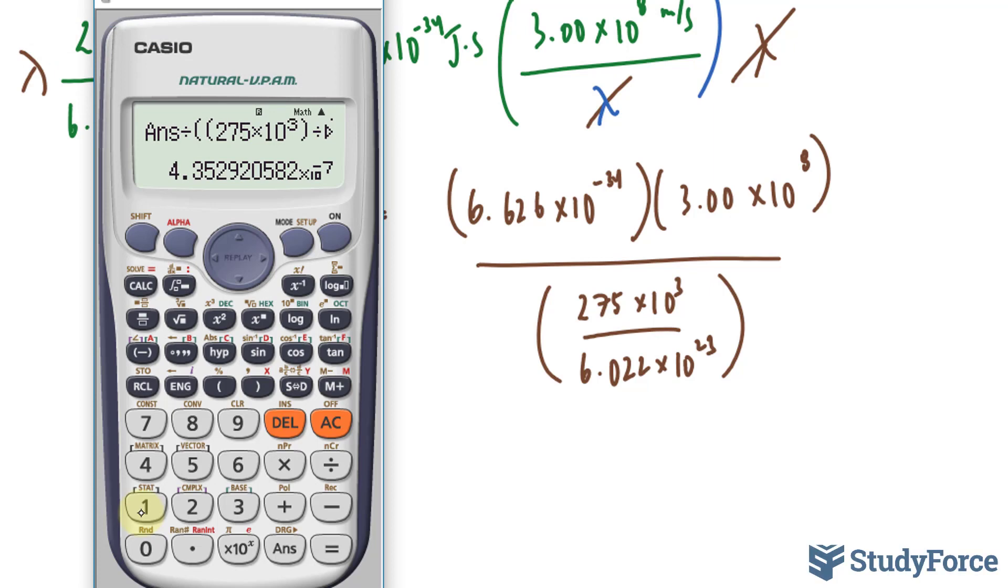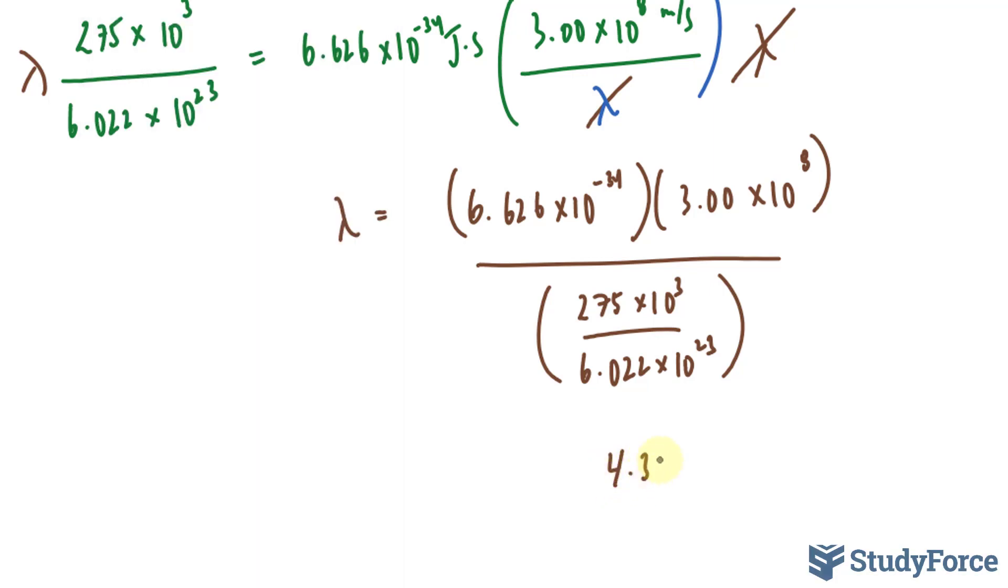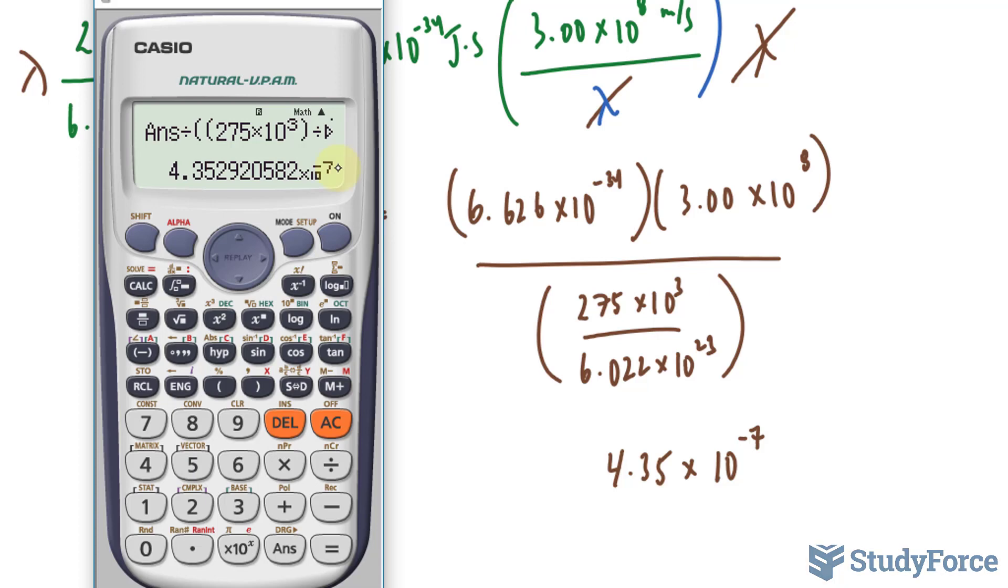The wavelength is technically 4.35 times 10 to the power of negative 7 meters. The significant figures are correct because we should stop writing after this 5, and the number following the 5 is a 2, so it doesn't influence the 5.